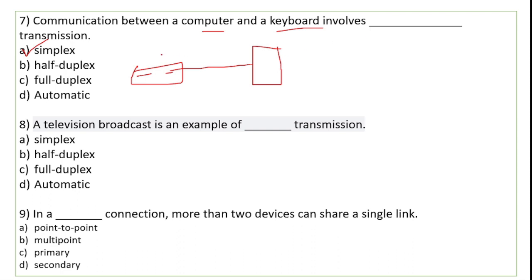A television broadcast is an example of dash transmission. Television mein satellite se aapke TV par direct connection hota hai. Aap apne TV se satellite ke paas kuch send nahi karte. So this transmission is simplex — one way communication from satellite to the television.